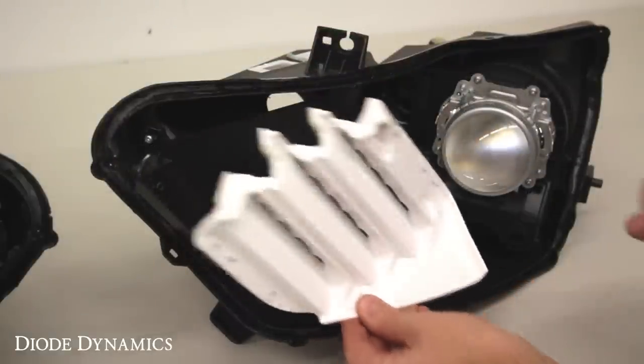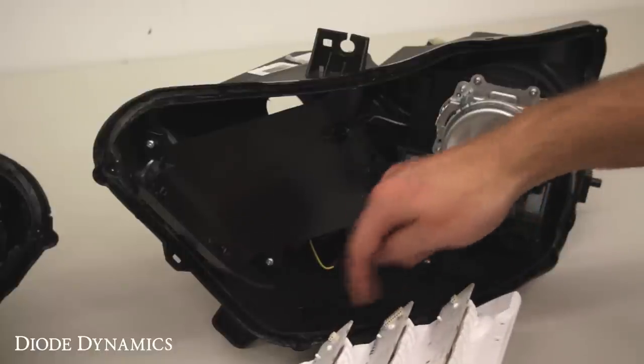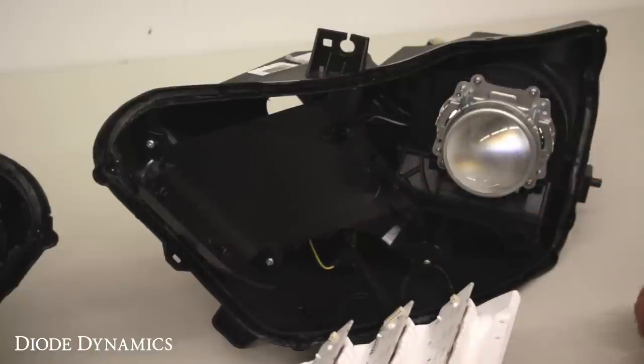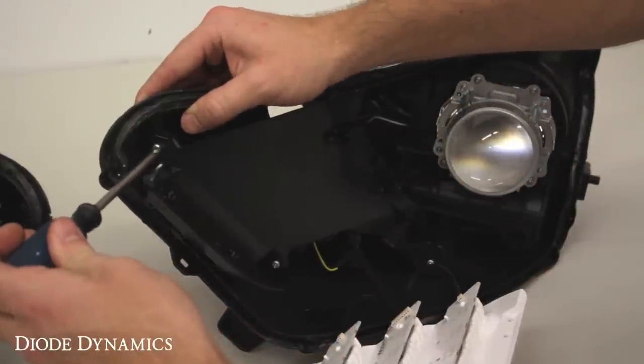Once those are unscrewed, go ahead and pull this off a little bit, and you'll see that it's attached with wires. Now these are soldered to these boards, so don't try to unplug those. We're going to remove the next four Phillips screws that are holding this black cover in place.